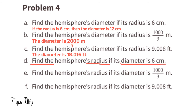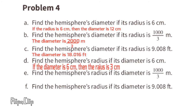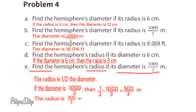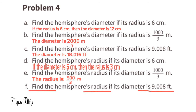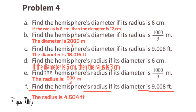Part d: find the radius if the diameter is 6 centimeters. The radius is half the diameter, so the radius is 3 centimeters. Part e: find the radius if the diameter is 1000/3 meters. Half of 1000/3 is 500/3, so the radius is 500/3 meters. Part f: find the radius if the diameter is 9.008 feet. Half of 9.008 is 4.504, so the radius is 4.504 feet.